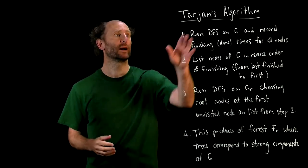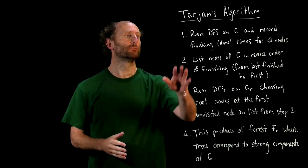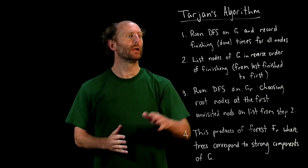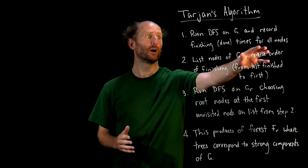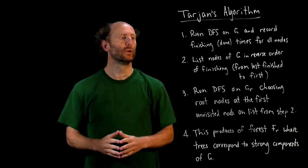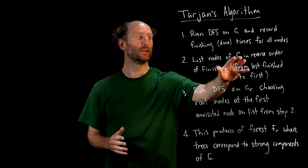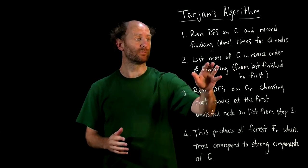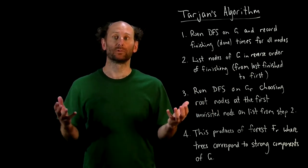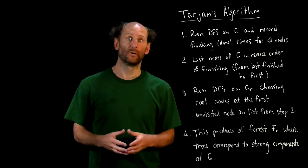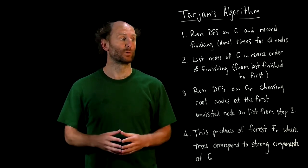Okay, so this is how Tarjan's algorithm looks. We run DFS on G, we record the finishing times for all nodes. We list the nodes of G in reverse order of finishing, so this is as if we were finding a topological order of G, although there's no assumption that there is a topological order of G.